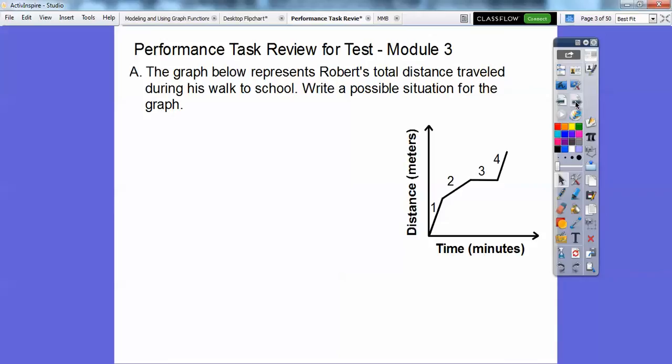Okay, so you had something like this. The graph below represents Robert's total distance traveled during his walk to school. So write a possible situation for the graph. Okay, so he's walking. It looks like he's walking fast when it gets steep and a little bit slower right here. What do you think this represents right here?